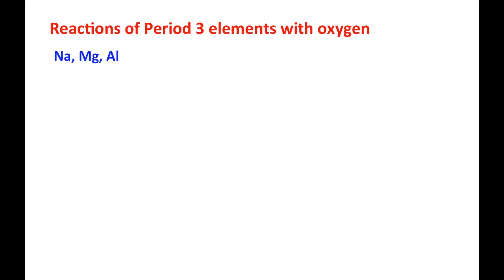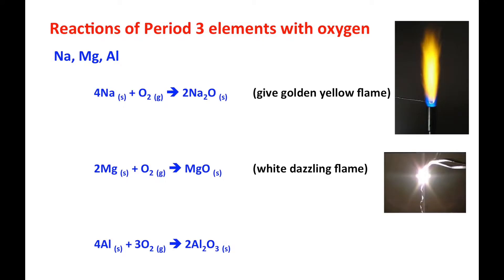Here it shows the reaction of the metallic elements in period 3 with oxygen. First of all, sodium - I know you have learned the equation already. Now this time, only memorize the observations. Sodium will give golden yellow film and magnesium will form white DC film.